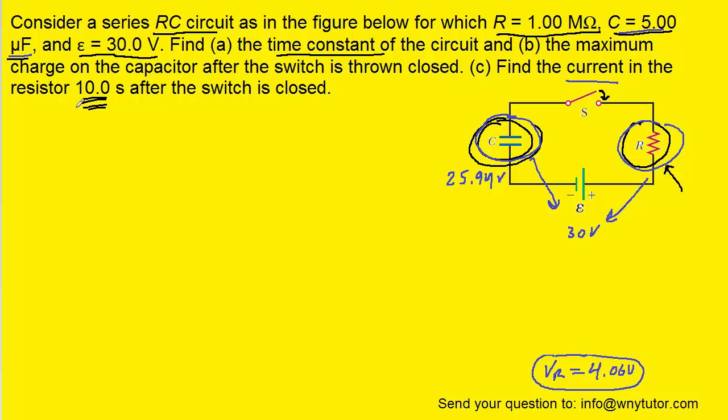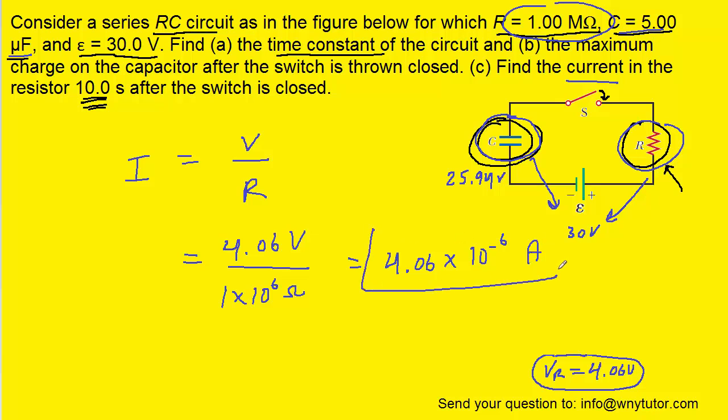Now finally, we are set to find the current on the resistor because we know that current on a resistor is equal to the volts on the resistor divided by the resistance. So all we need to do is take the volts that we just obtained and divide it by the resistance, which again was 1 mega ohm. So that's 1 times 10 to the positive 6 ohms. And we obtain a current of 4.06 times 10 to the minus 6 amps. And that is indeed the correct answer. If you wanted to convert that into micro amps, you could multiply by 10 to the positive 6. So that would make it 4.06 micro amps. Either answer would be acceptable.